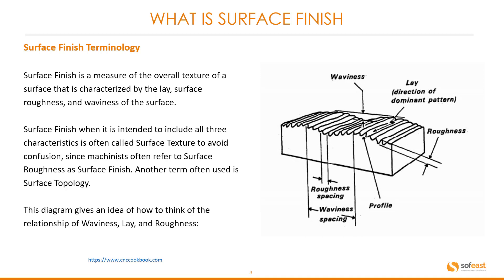Another term often used is surface topology. This diagram gives an idea of how to think of the relationship of waviness, lay, and roughness. Here we see the waviness, this is the roughness, and you can see the lay direction.